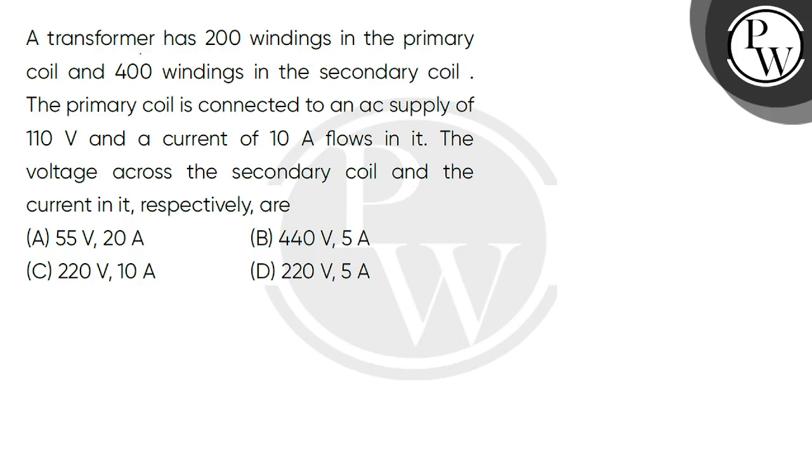Hello Bacchum, let us read the question. A transformer has 200 windings in the primary coil and 400 windings in the secondary coil. The primary coil is connected to an AC supply of 110 volt and a current of 10 ampere flows in it. The voltage across the secondary coil and the current in it respectively are.